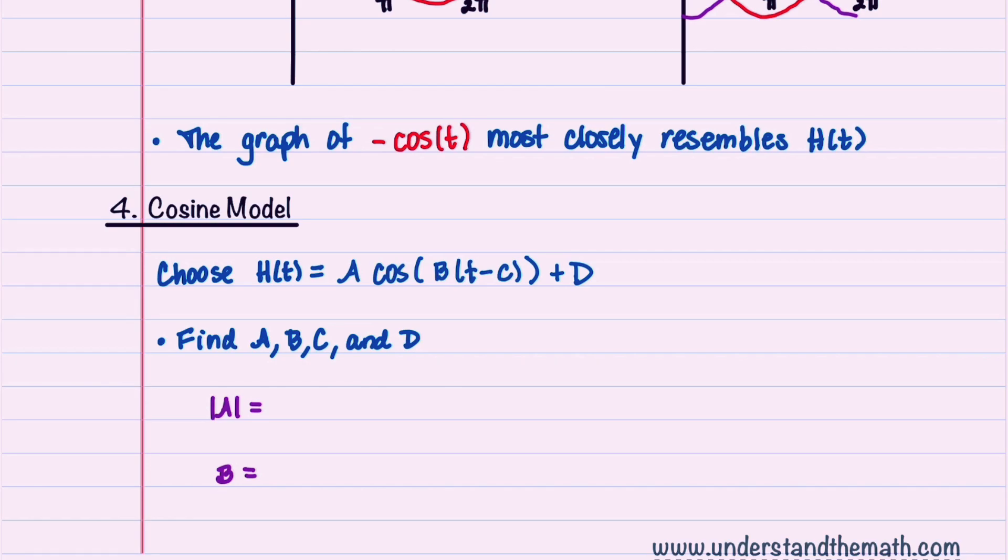The absolute value of A is our amplitude and it's equal to the maximum value of h of t minus the minimum value of h of t all divided by 2. The maximum value of the rider is 35 and the minimum is 5 all divided by 2, and that gives us a value for the amplitude of 15.